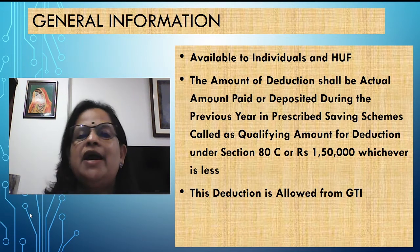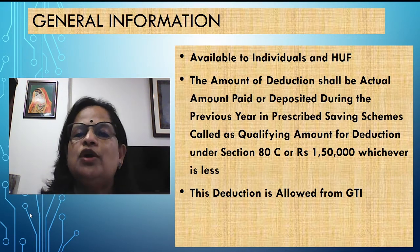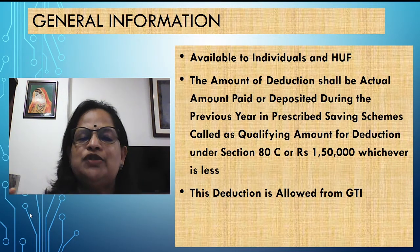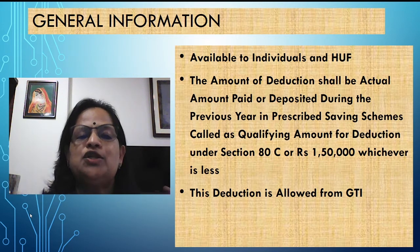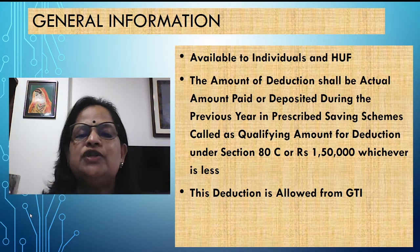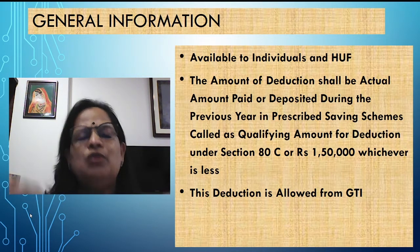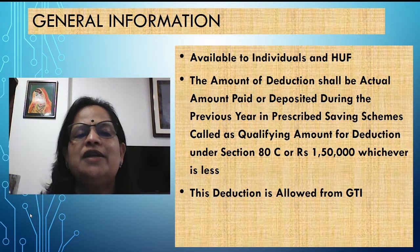The amount of deduction shall be the actual amount paid or deposited during the previous year in the prescribed savings schemes — this is called the qualifying amount (QA). I will give you a list of items. All the savings schemes, whatever amount you deposited, the total in those savings schemes together is the qualifying amount. The deduction is: qualifying amount for section 80C or 1,50,000 — whichever is less. Most people will try to make their savings up to 1,50,000 to reduce the tax liability.